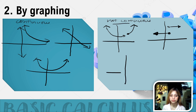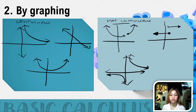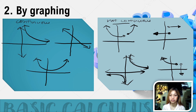Likewise, if your graph looks like disconnected pieces where you have to lift your pen to graph the first and second parts, or any part of the graph, then there is a discontinuity. Therefore, the function is not continuous — there is a breakage in the graph.